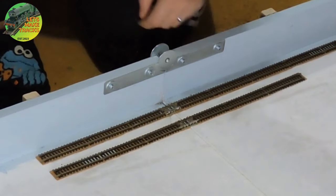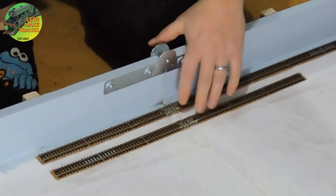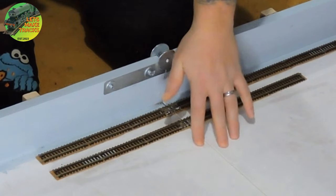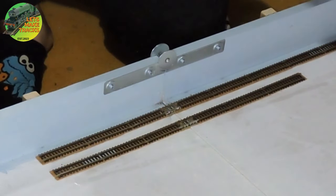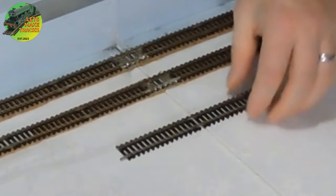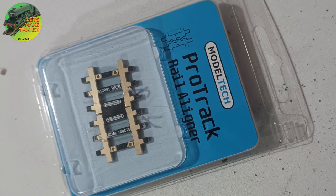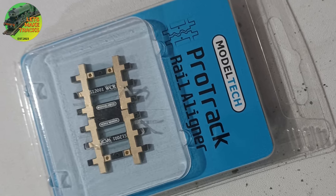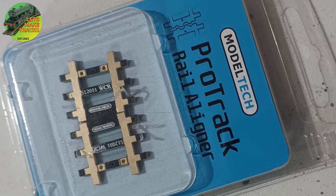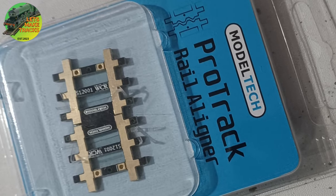I already have the first two tracks in place. So what I'm going to do is install the third one prematurely just to show you how I did it. First thing you need is a piece of track. To ensure the rails line up after opening and closing, I'm going to be using these ProTrack rail aligners and we'll go into more detail with these a bit later on.